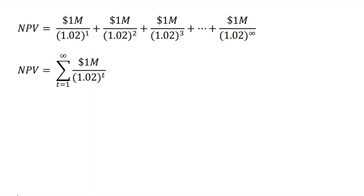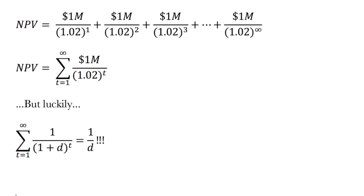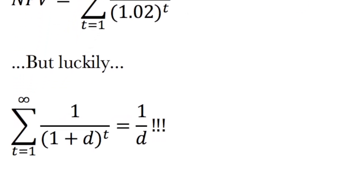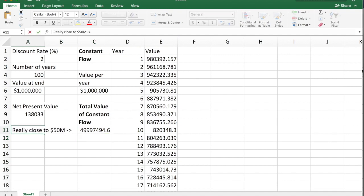I can simplify that by writing it as a sum: NPV equals the sum from t equals 1 to infinity of 1,000,000 over 1.02 raised to the t. It turns out — and some of you may have proven this in the infinite sums section of college algebra or calculus — that the sum of 1 over (1 plus d) to the t equals 1 over d. That's a pretty cool result. If you don't believe it, we can do an approximation in Excel. Just remember that the smaller the d, the more cells you'll need to calculate to get close to the infinite sum, because values farther in the future still matter.